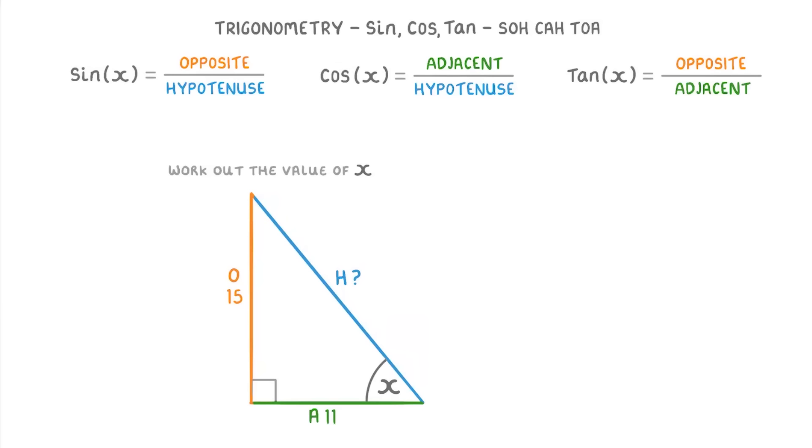So next, we need to look at the three equations and find which one we can use with the information that we've been given. If we start with sin X equals opposite over hypotenuse, we can't use this one because we don't know the length of the hypotenuse. And if we look at cos X equals adjacent over hypotenuse, we've got the same problem again. This leaves us with the tan X equals opposite over adjacent equation then, which we can use because we do know what the opposite and the adjacent lengths are.